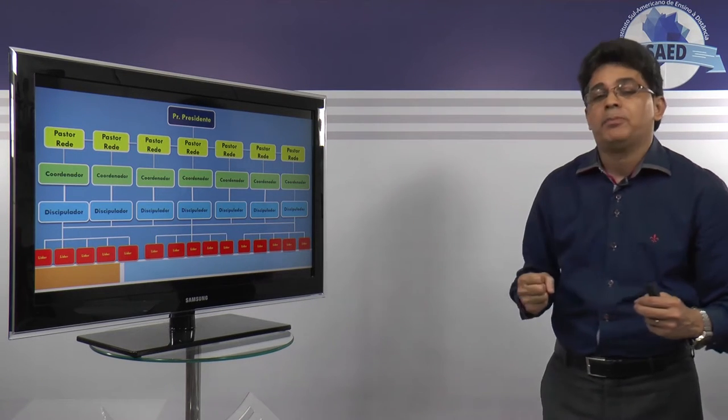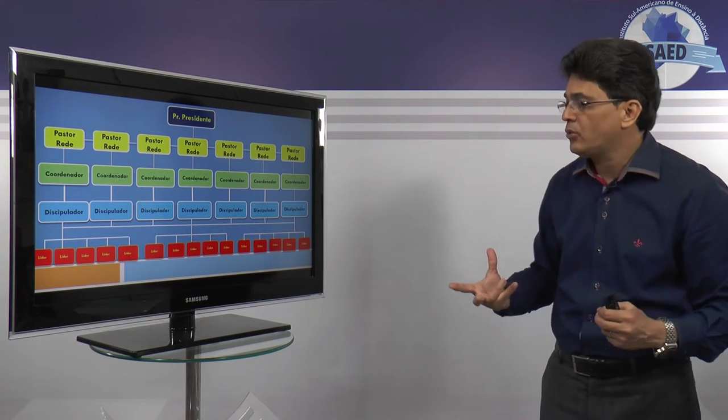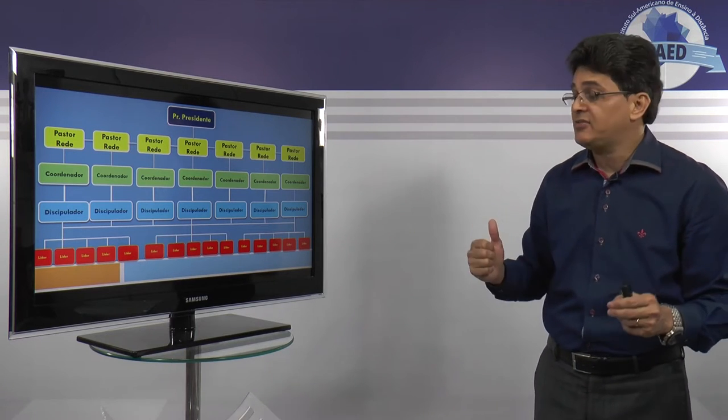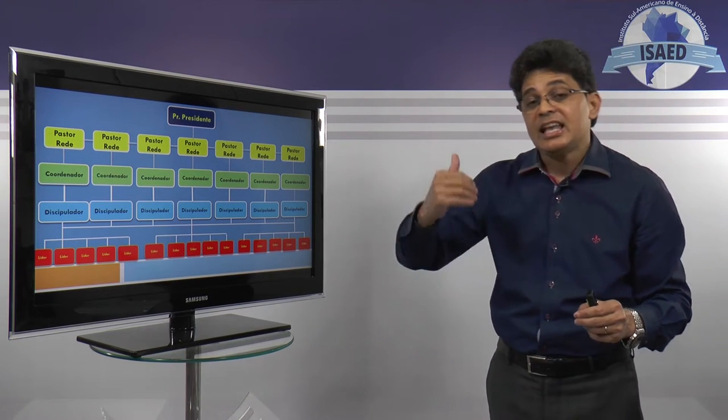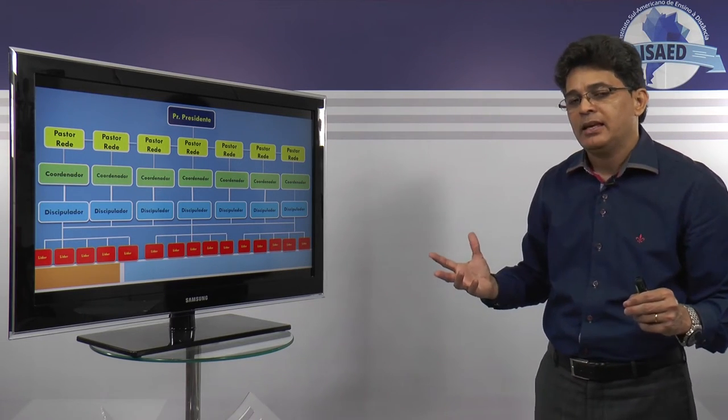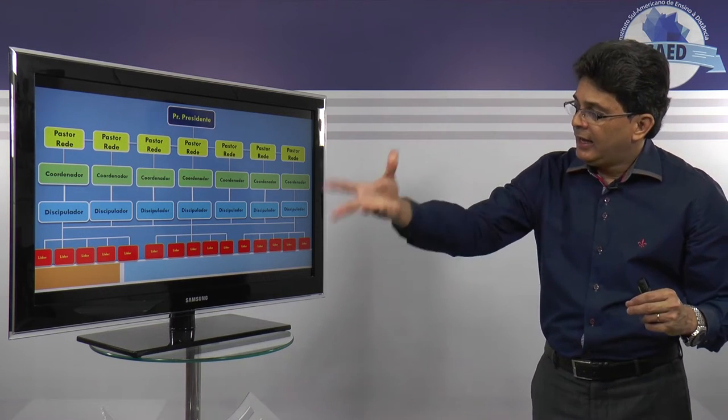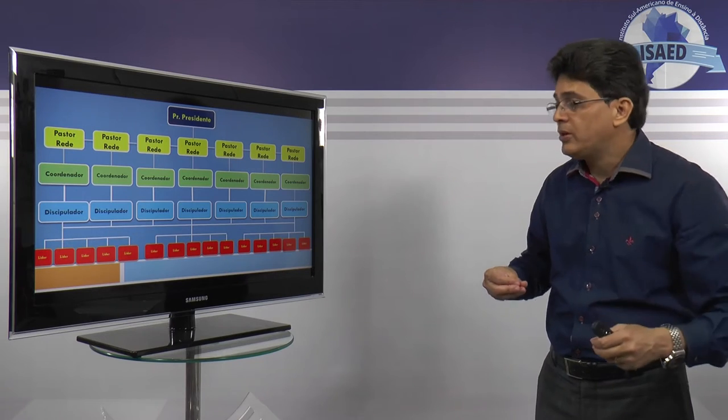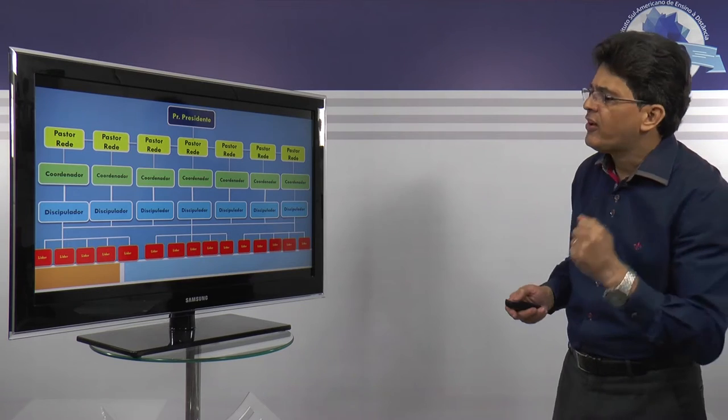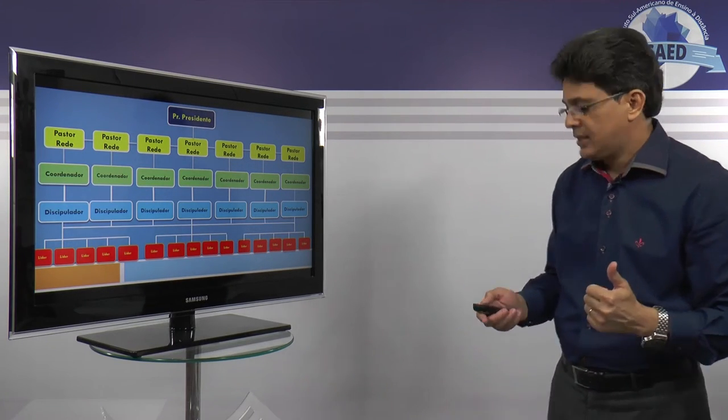Prepara ele para que ele um dia venha a ser um discipulador. E aí esse discipulador vai cuidar de cinco líderes, mas na frente a necessidade vai exigir que ele saia da função de um discipulador para exercer uma função de um coordenador, e assim ampliar mais o leque de supervisão, de compromisso, até que ele venha a exercer a função de um pastor de rede. Mas eu já falei bem sobre este organograma nas aulas anteriores.